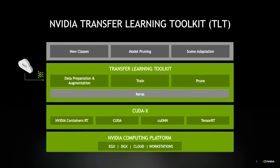Models trained with TLT can be deployed on edge-based EGX servers. Training is done on DGX machines — essentially supercomputers in a box — or on cloud instances with a GPU, or on your own workstation with an NVIDIA GPU.